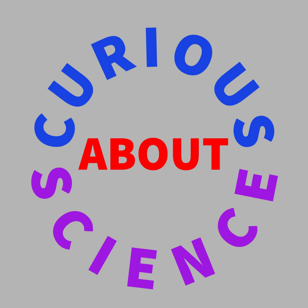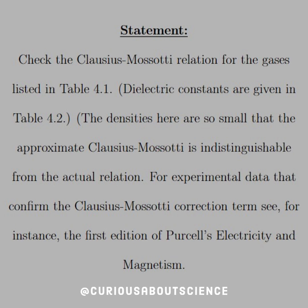Hey there, welcome back. In typical fashion with this book, we have a numerical problem to end the chapter. In this case, we want to use the relation we found in a previous problem, which is known as the Clausius-Mossotti relation. Not sure how to pronounce it properly, but that's my guess.